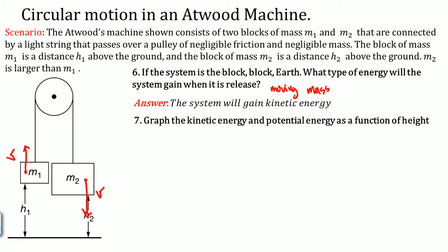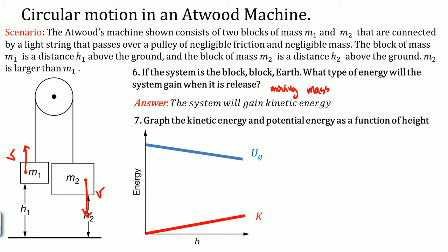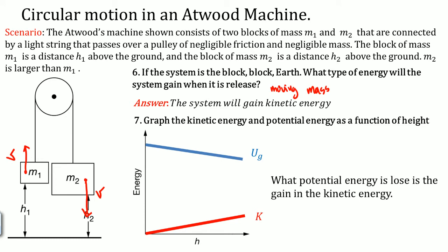Graph the kinetic energy and potential energy as a function of height. The energy lost by U_G decreases as a function of H. The energy lost by gravity in the system is gained by kinetic energy in the system because the system is still closed. So what potential energy is lost in the system is gained in terms of kinetic energy.